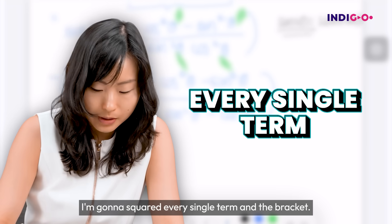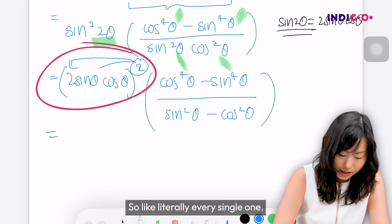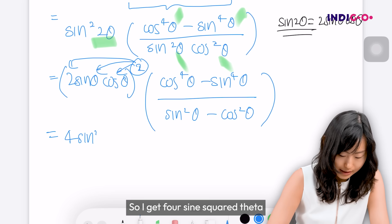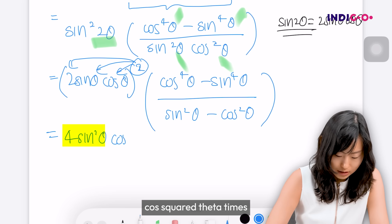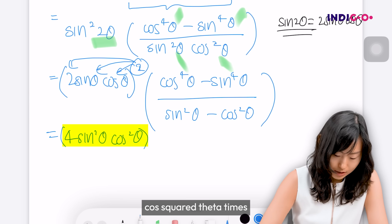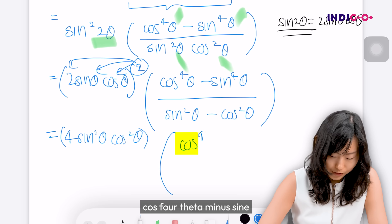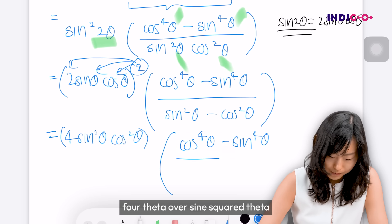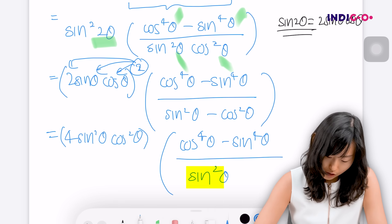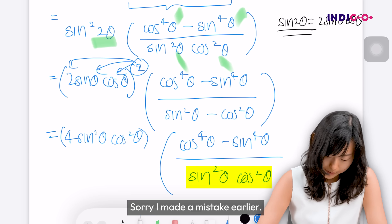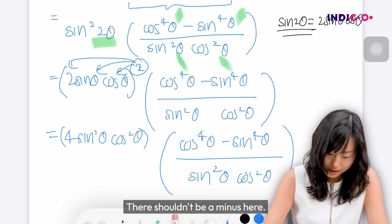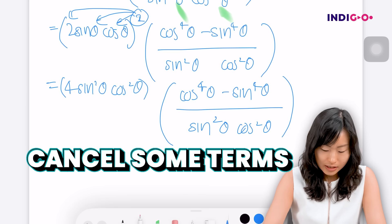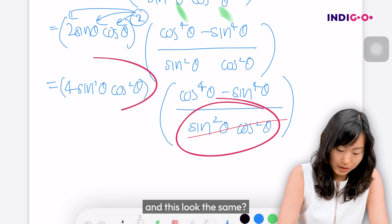I'll copy down whatever is written and open up the square, squaring every single term in the bracket. I get four sine squared theta cos squared theta, times cos to the power of 4 theta minus sine to the power of 4 theta, over sine squared theta cos squared theta. You'll notice we can cancel the sine squared theta cos squared theta terms from the numerator and denominator.